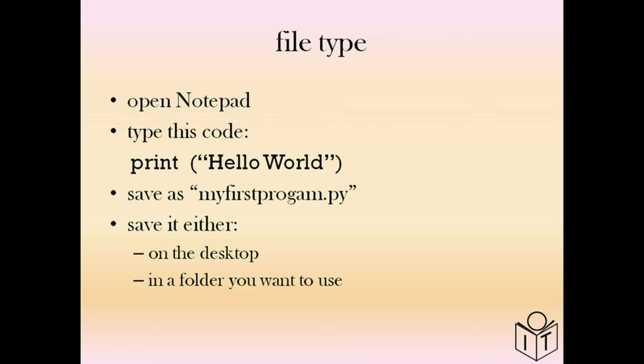Save the file — in this example you can call your program 'my_first_program.py'. You can save it on the desktop so you know where it is, or if you're organized you can create a folder and put the file in there. It's important to know where the file is saved.